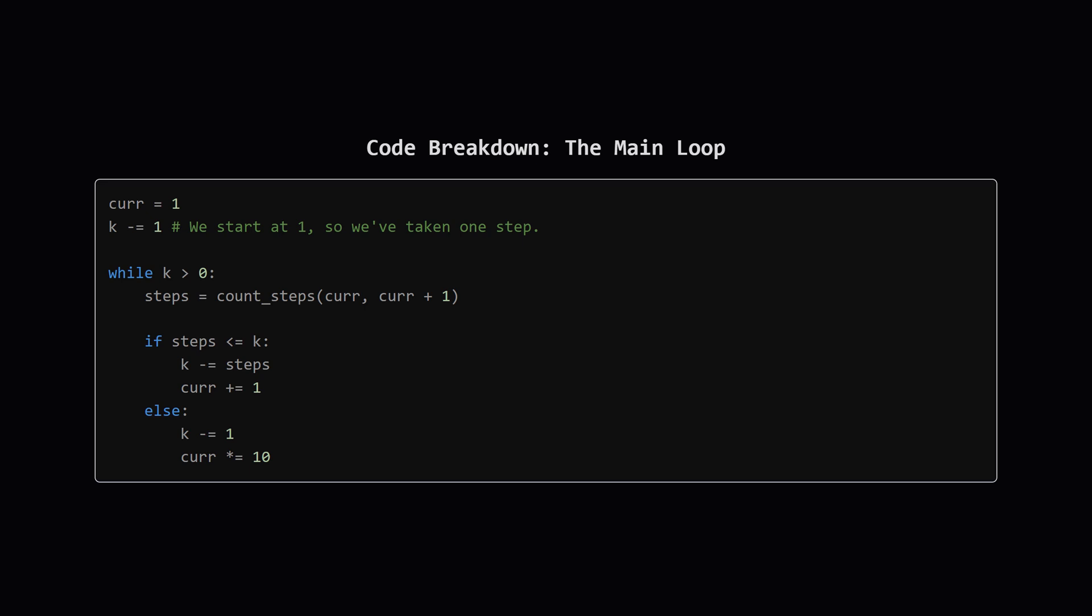Inside, we first calculate how many nodes are in the current group. If the number of steps we need to take, k, is bigger than that count, we just skip the whole group. We do this by subtracting the count from k, and moving our current number to its sibling, which is just the current number plus 1.